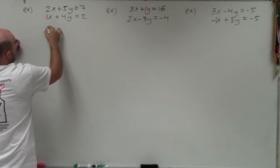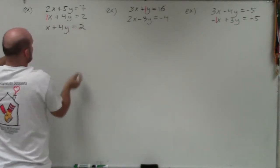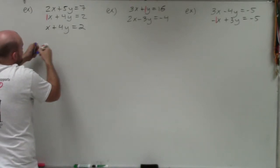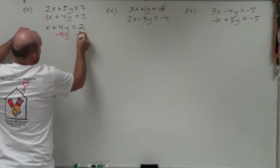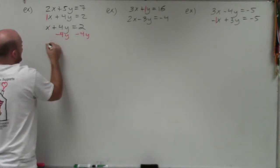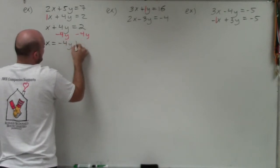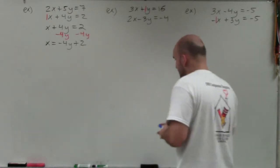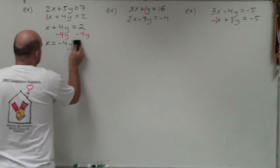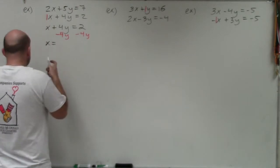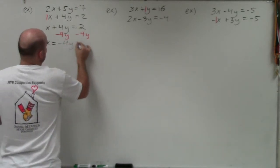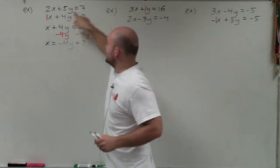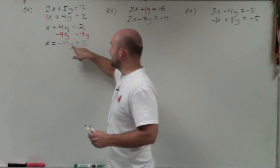I have x plus 4y equals 2. Having 1 as a coefficient is nice because to solve for x, all I have to do is subtract 4y. So x equals negative 4y plus 2 — and it's that easy. So x is equivalent to negative 4y plus 2. I took this equation and solved it for x.